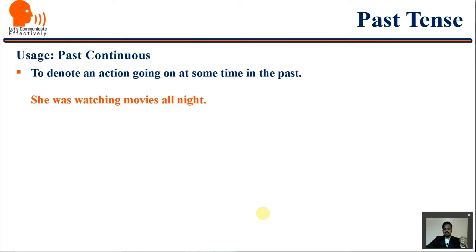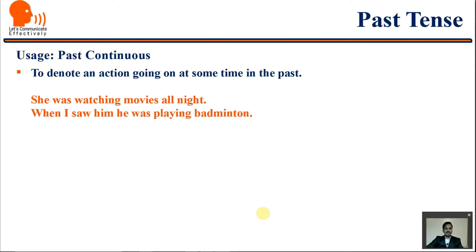Past continuous is used to denote an action going on at some time in the past. For example: 'She was watching movies all night' — the action was just going on. She must have finished all her exams, so she was watching movies all night.